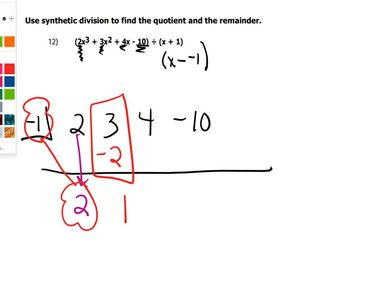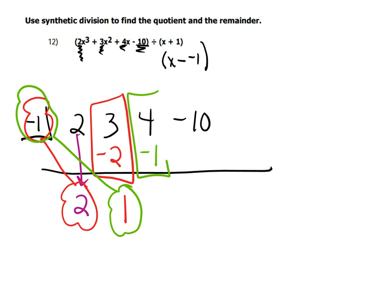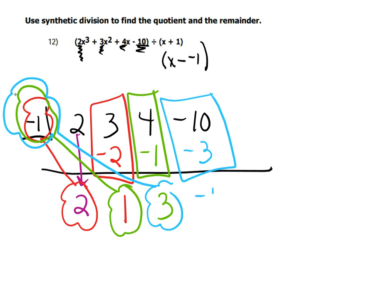And then you start by dropping down the 2. And then you're going to take the 2 times the negative 1. That is negative 2. And then you add these two and you get 1. Then you take the 1 times the negative 1. And that is negative 1. Add these two together and you get 3. Then you're going to take the 3 times the negative 1. That's negative 3. And add these two together and you get negative 13. So that your answer is this 2 is the coefficient on, since we were dividing,